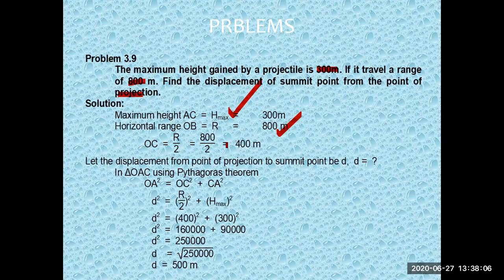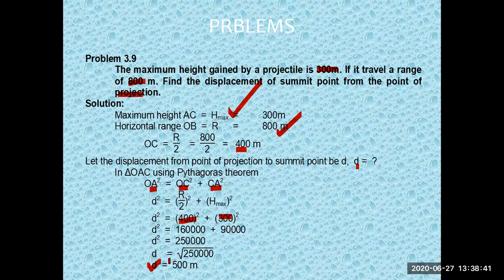The horizontal distance to the summit point will be half of the range, which is 400 meters. By using the Pythagorean theorem, the displacement OC equals the square root of OA squared plus AC squared. After putting in the values — 400 squared plus 300 squared — this gives the displacement of the summit point.